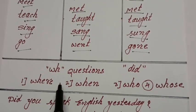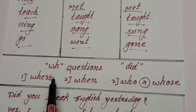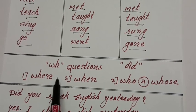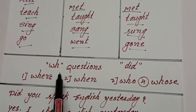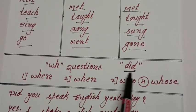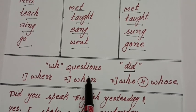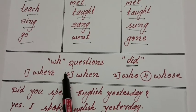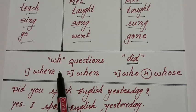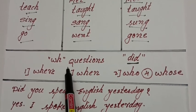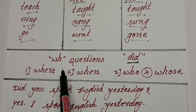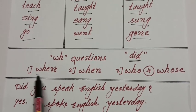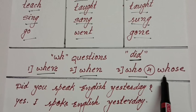On this, we are taking how to make the WH questions. While we are making the WH questions, first you use 'did'. Whenever 'did' comes, the first form is used. If you are making the positive sentence, then you use the second form. When you are making the negative sentence, then you use 'did' with the first form. WH questions we are making: where, when, who, whose.